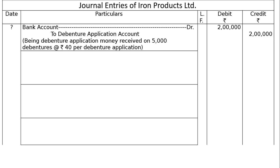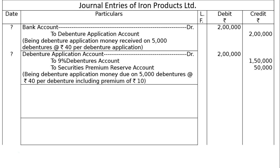Second entry: Debenture Application Account debited Rs.2,00,000, to 9% Debentures Account Rs.1,50,000, and to Securities Premium Reserve Account Rs.50,000. Being debenture application money due on 5,000 debentures at the rate of Rs.40 per debenture, including premium of Rs.10 — that is 5,000 × 10 = Rs.50,000, and 5,000 × 30 = Rs.1,50,000.